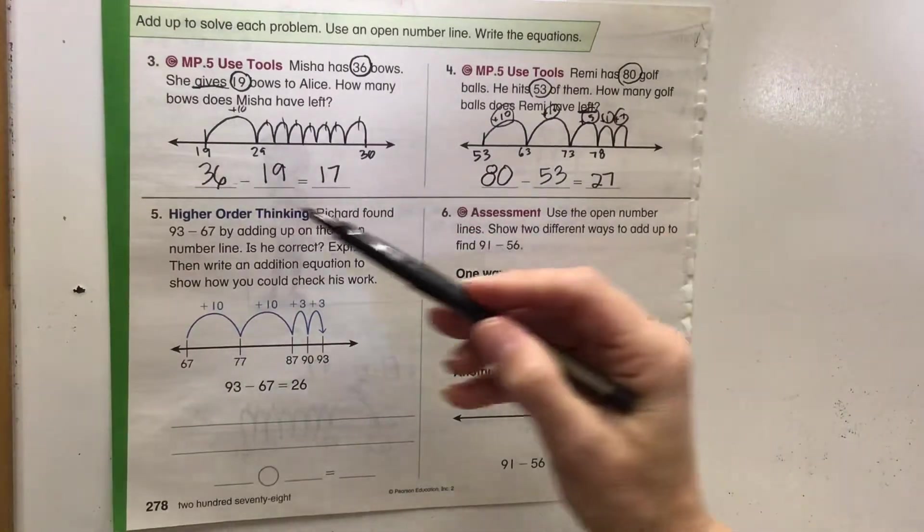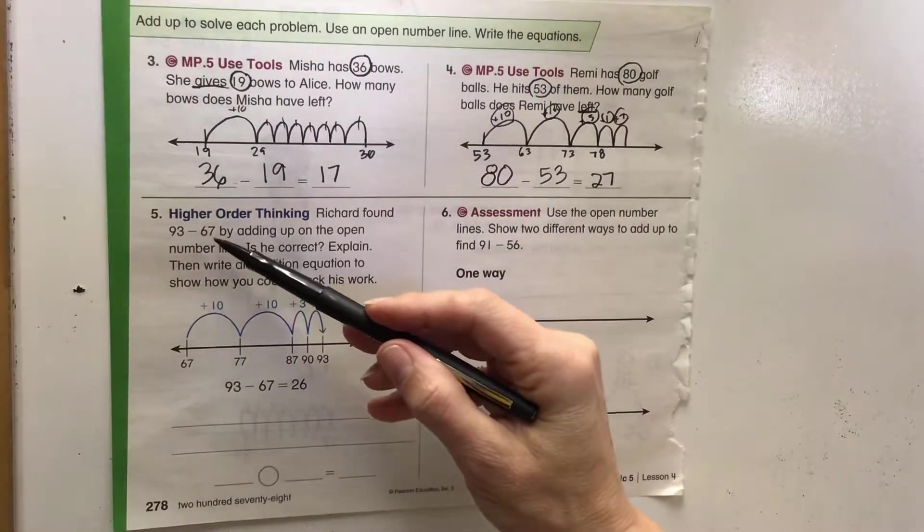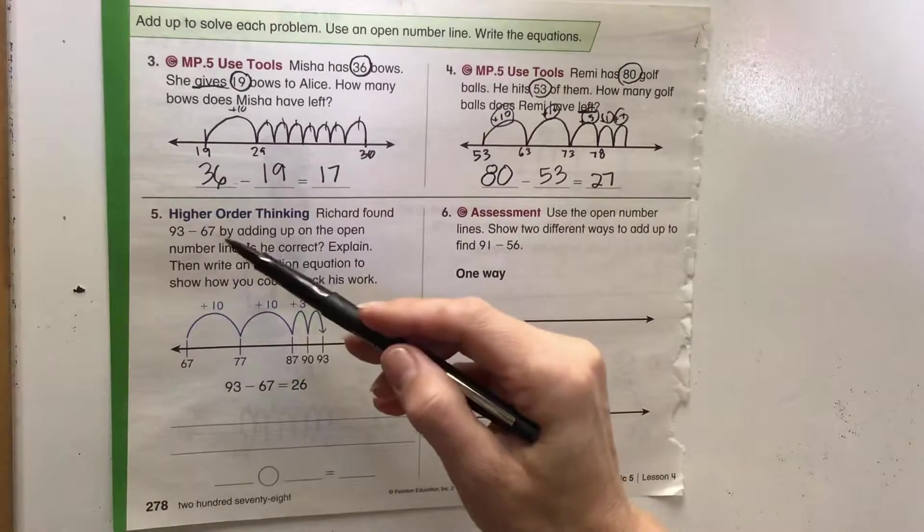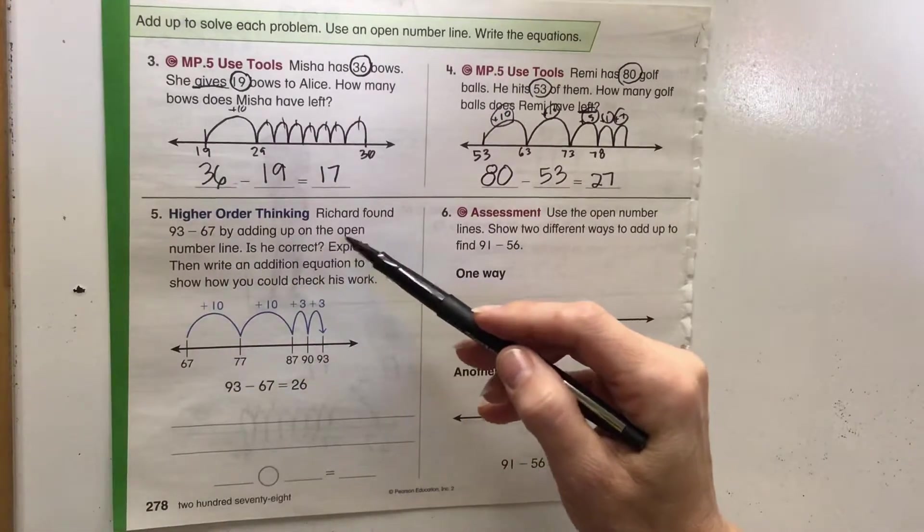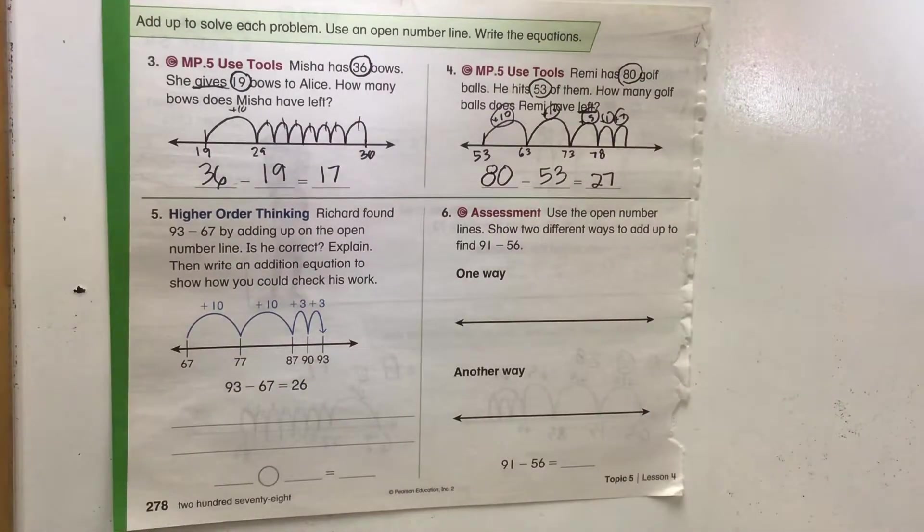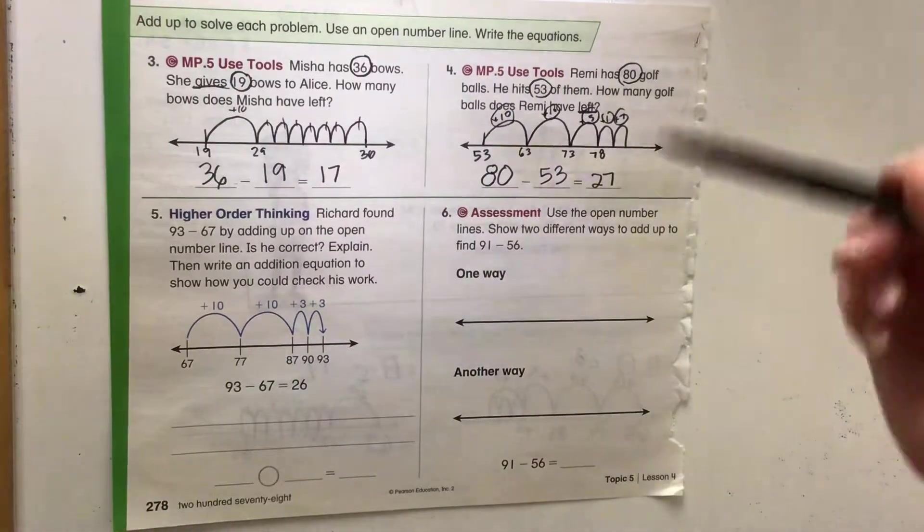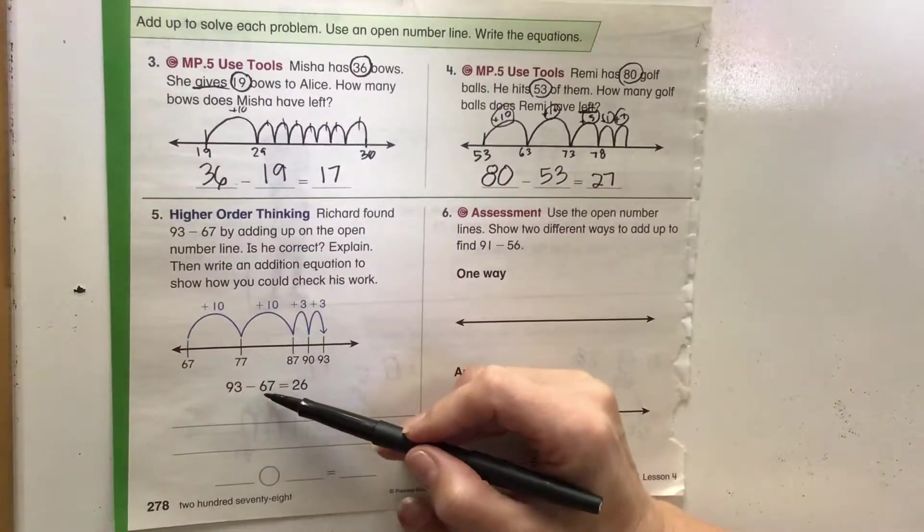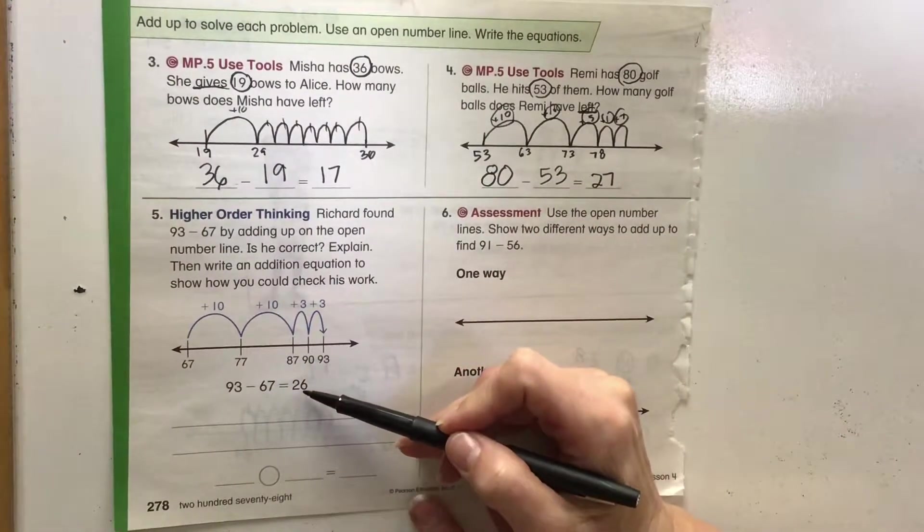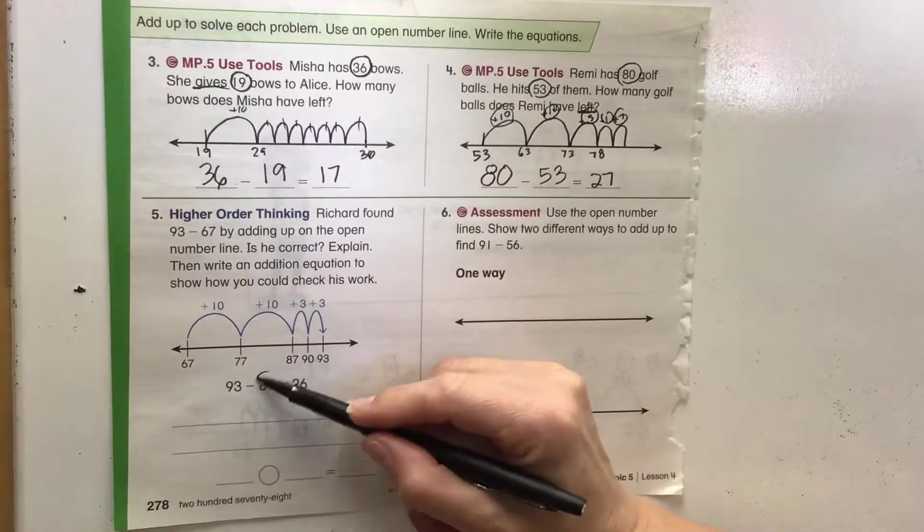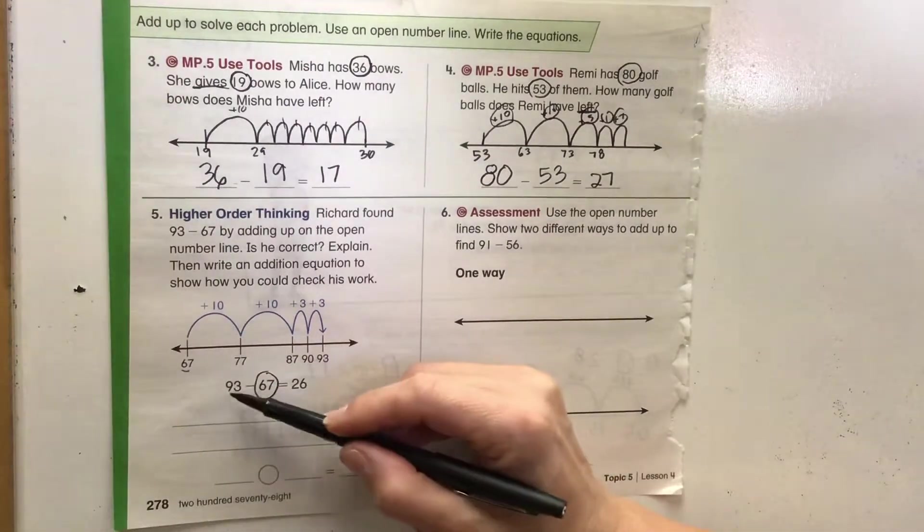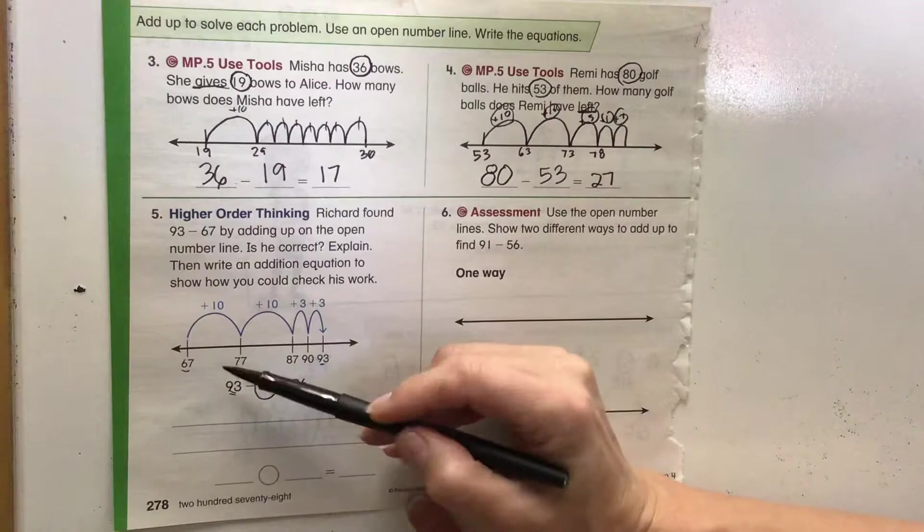Higher order thinking: Richard found 93 minus 67 by adding up on the number line. Is he correct? Explain. Then write an equation to show how you could check his work. So let's see, 93 minus 67 is 26. He starts here at the lower number and he's adding up to 93. So let's check his work.